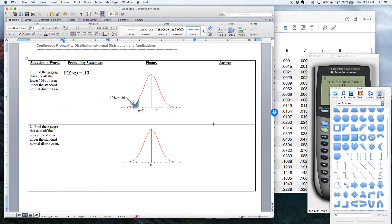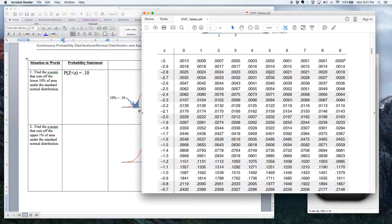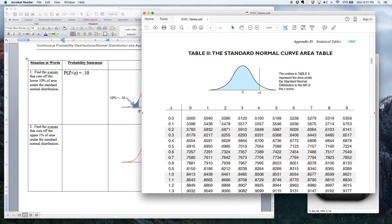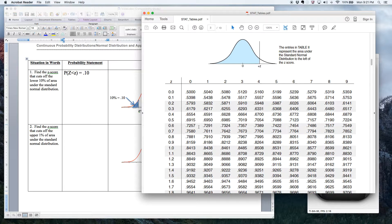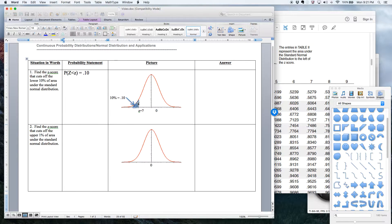All right, so now in terms of a table, this is a piece of cake. You go to your table and you look up where 10% is in your table. Now, obviously, in order for it to be 10%, this is on the left-hand side. Clearly, you can see it's on the left-hand side.